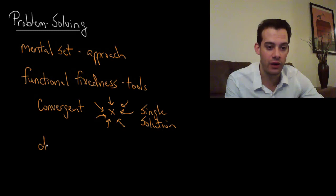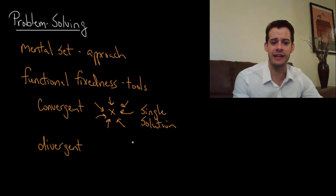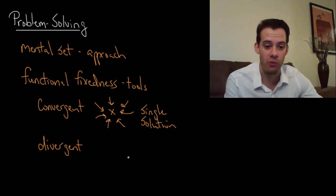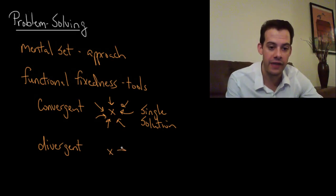In contrast we also have what's called divergent thinking. In divergent thinking we diverge from a single point so we have a starting point and then we have multiple solutions and these solutions sort of go off in different directions and by that I mean they may not be related to one another at all. And so this is a bit more creative.